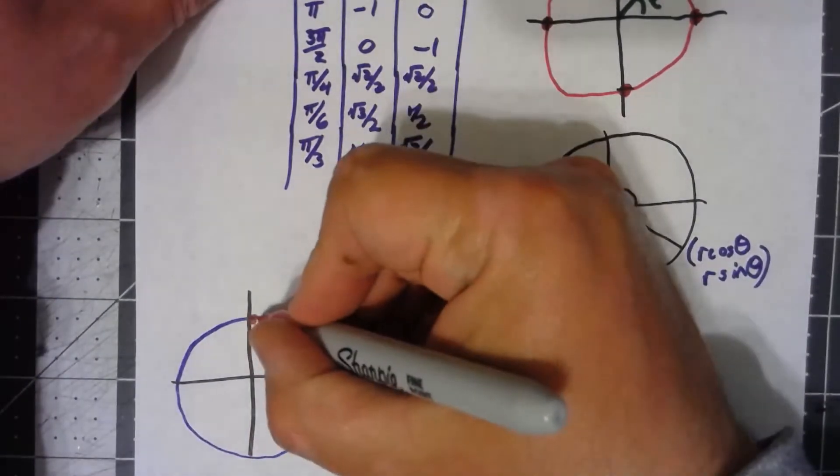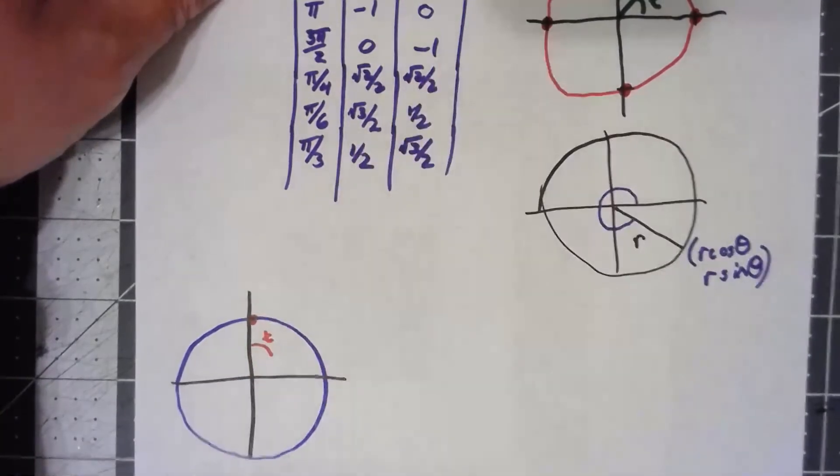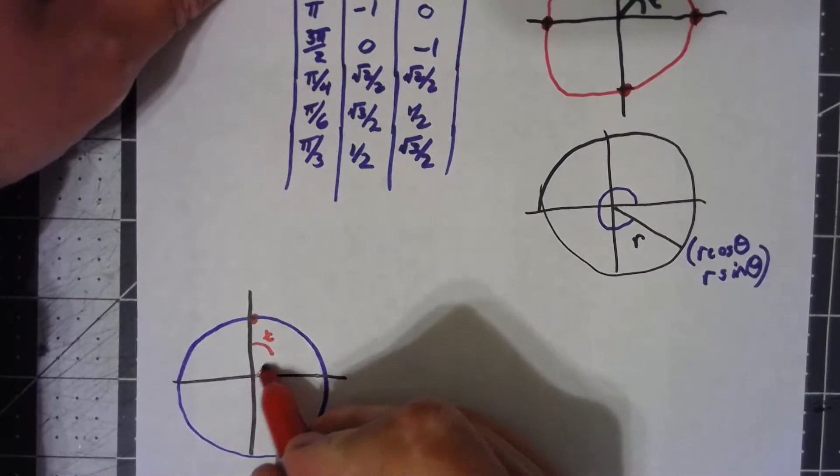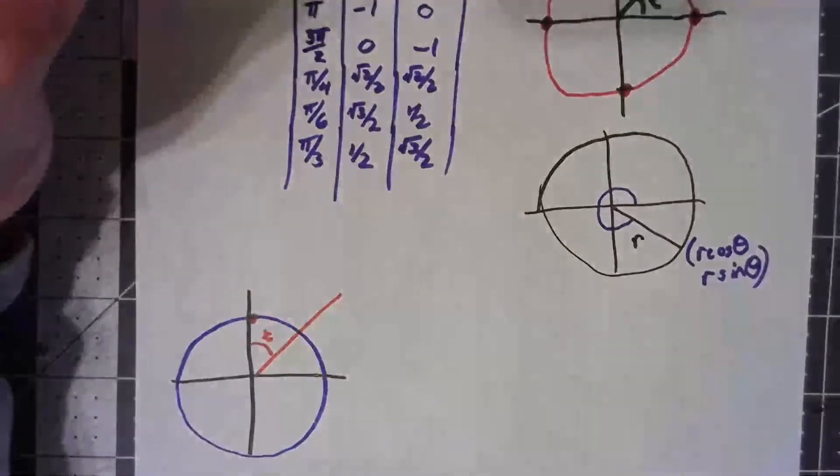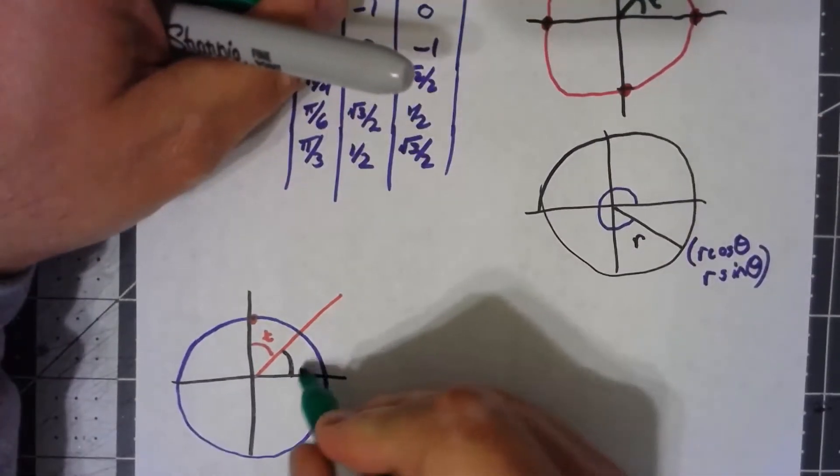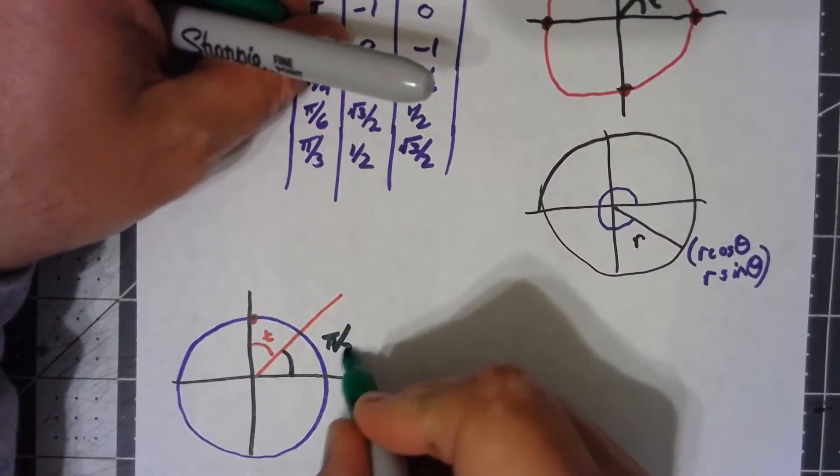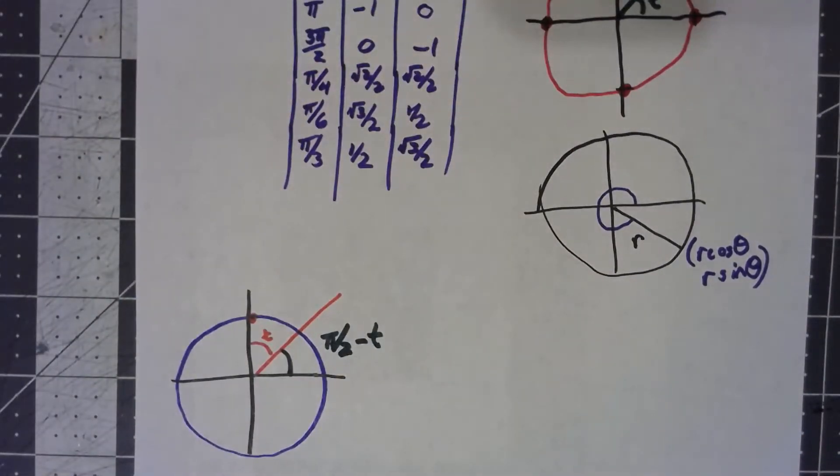Well, so let's say I go some distance t around there. Then what is my standard position angle here? This angle here would be pi over 2 minus t.